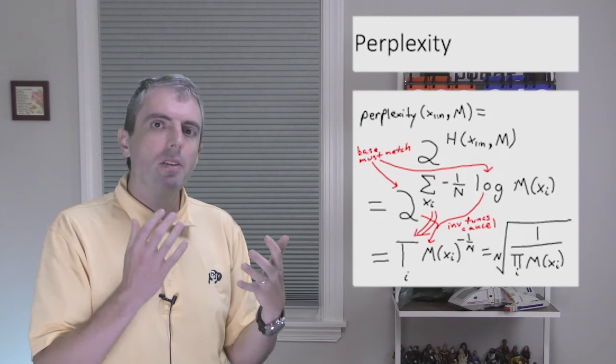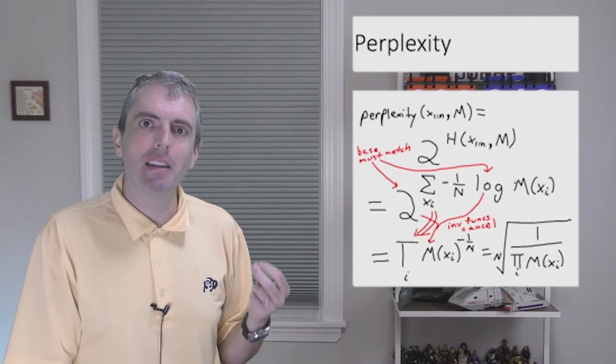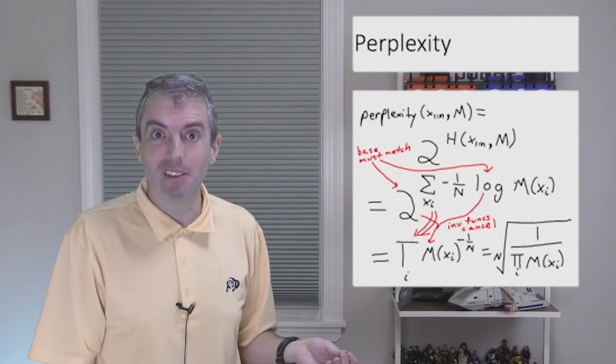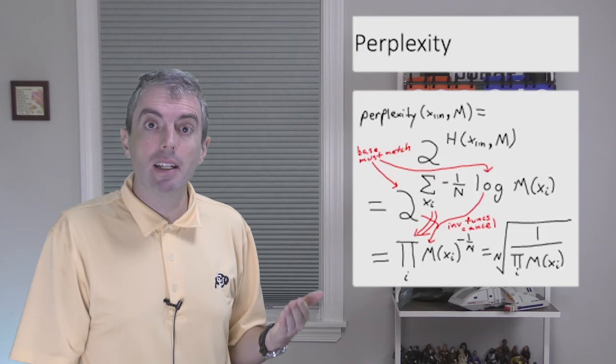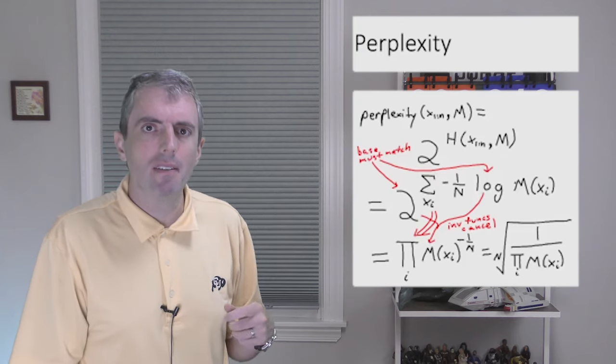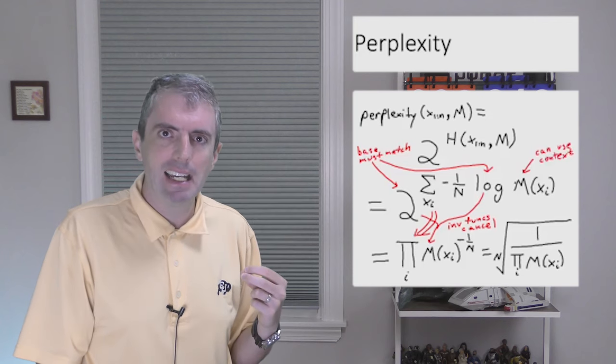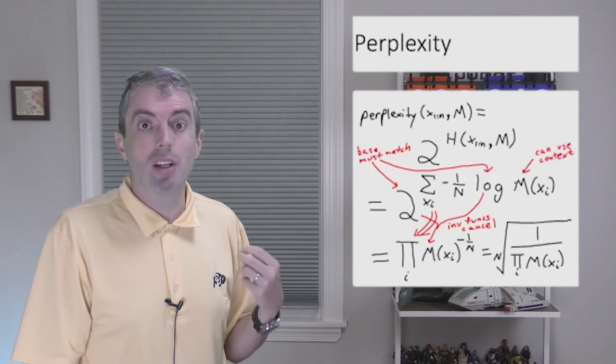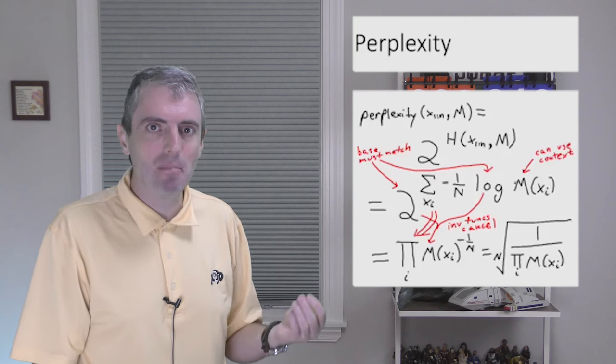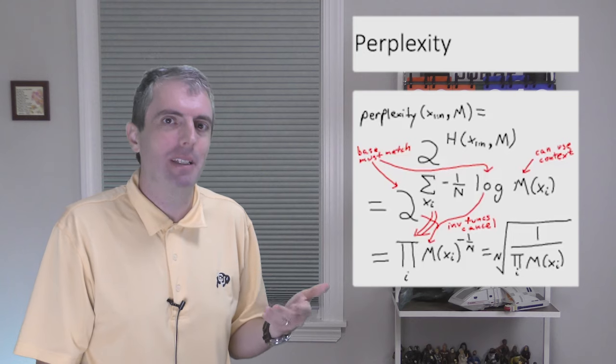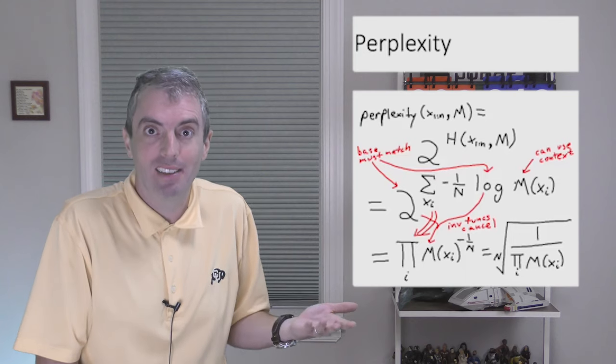So one question you might have is where did that super handy 1 over n come from? This is assuming that all of the words are equally probable, which I think is a fine assumption. The other thing in the notation that might throw you off is that we're just using m of xi for the probability of an observation under the model. Of course, most models use the context somehow, so this should really be the probability of xi conditioned on whatever context it's actually using.